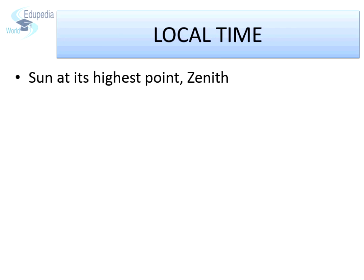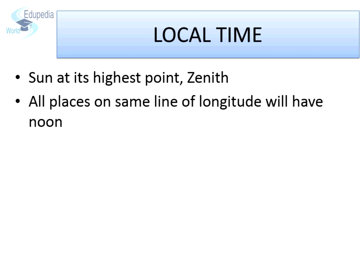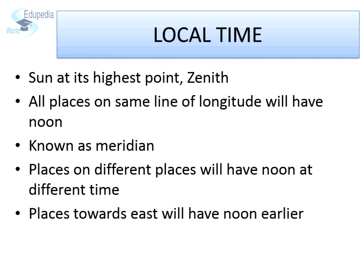Local time. As the earth rotates, every meridian faces the sun directly once every day. This is the time when all places on a particular meridian will see the sun at its highest position in the sky — the meridian. This time becomes noon for the meridian. The local time of a place is fixed on the basis of meridian. Since midday occurs at different times at different places, the local time varies from place to place. Any place located to the east of another place will have midday earlier, as the earth rotates from west to east.